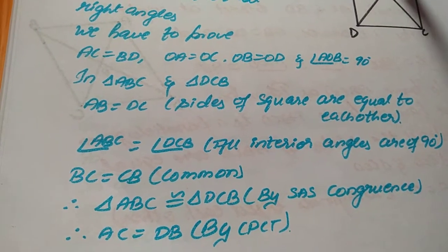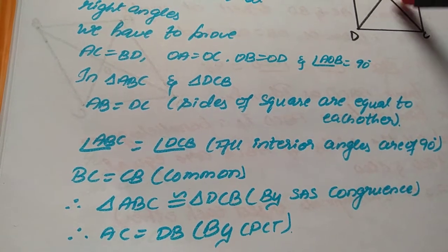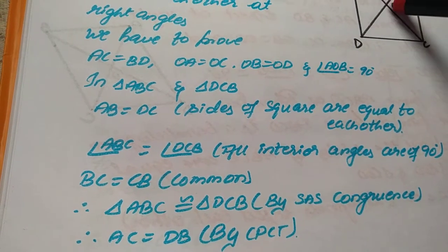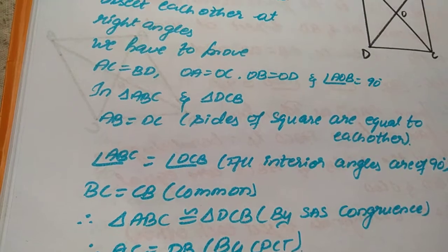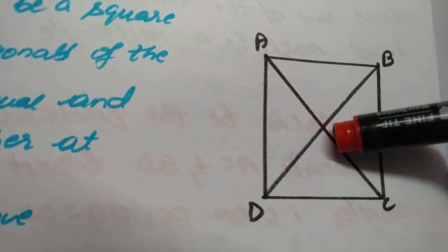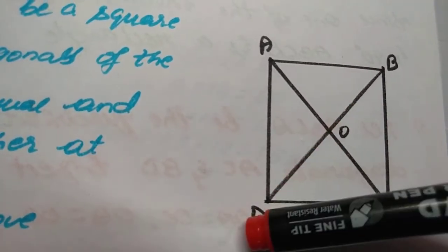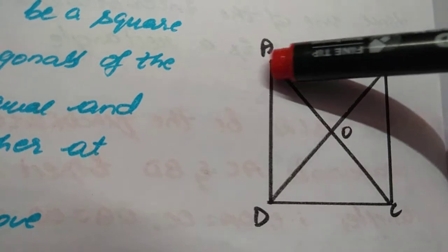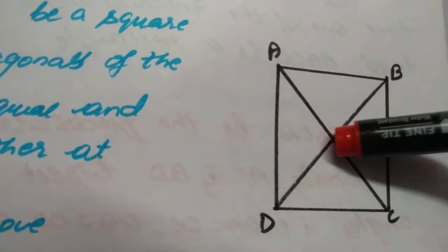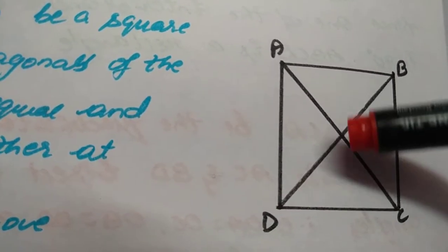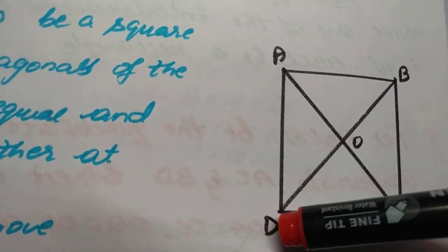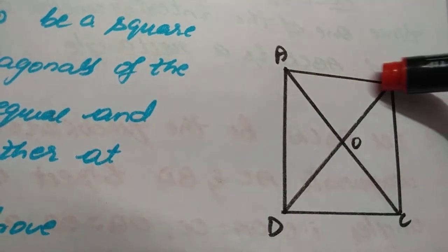Coming to the second part, I have to show all the angles are 90 degrees. If I show one angle is 90 degrees, I can similarly say all the other angles are also 90 degrees. For my second proof, I will consider triangles AOB and COD. AB equal to CD — first similarity. Second similarity: angle AOB equal to angle COD because they are vertically opposite angles. And the third point is AB and CD are parallel to each other.